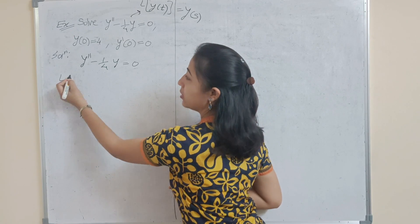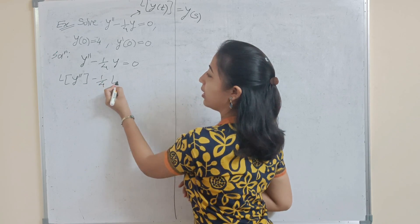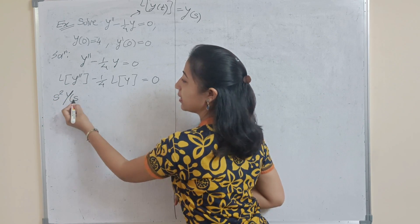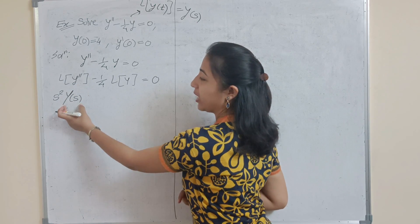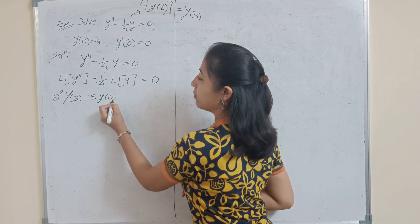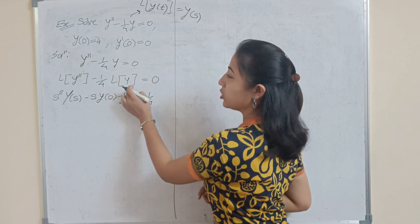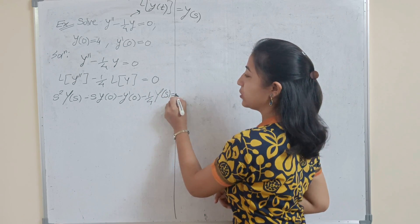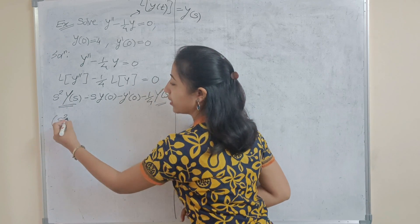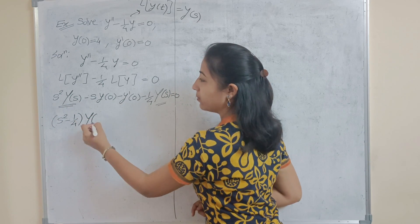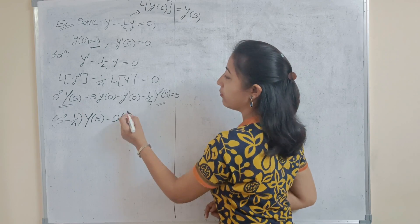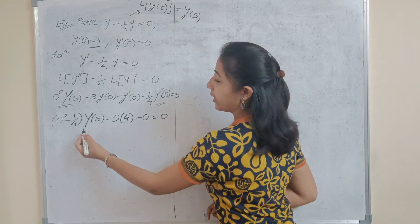Applying the Laplace transformation to the differential equation, you get: Laplace of y'' minus (1/4) times Laplace of y equals Laplace of 0, which is 0. Now, Laplace of y'' is s²·Y(s) — where the small y becomes the new function capital Y(s) — minus s·y(0) minus y'(0). Minus (1/4)·Y(s) equals 0. Substituting the initial conditions: y(0) = 4 and y'(0) = 0.